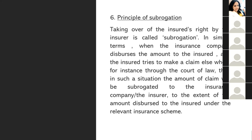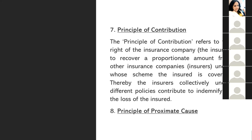Next is the principle of contribution. This simply means that when the object of your coverage is insured with several insurance companies, there will normally be a contribution in protecting each of those companies. For example, if you insure your car for 50,000 with Company A, 30,000 with Company B, and 20,000 with Company C, your total insurance is 100,000 across three companies. If there is an accident and the car is destroyed, compensation is received from all three companies. This is the principle of contribution.